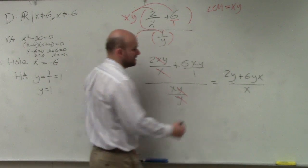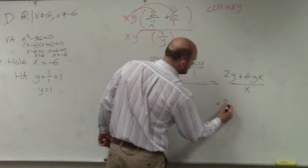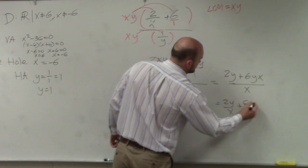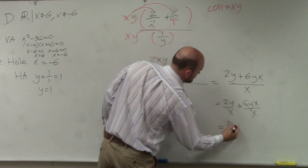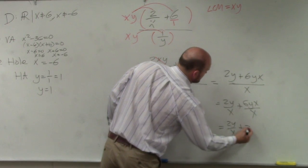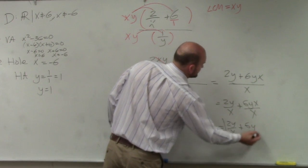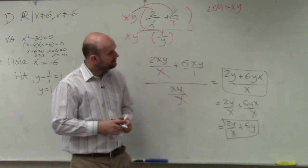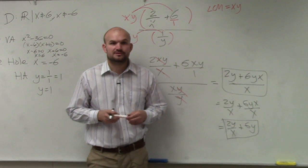Which they could write in an equivalent form. You could distribute the x to both of those terms. So you could see the answer like this, or you could see the answer like that. But either way, those are both acceptable answers.